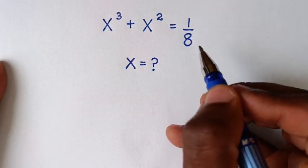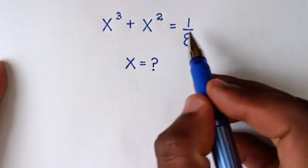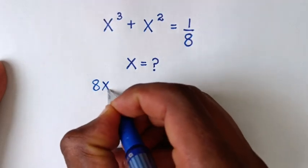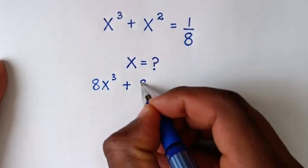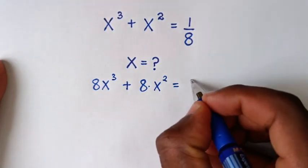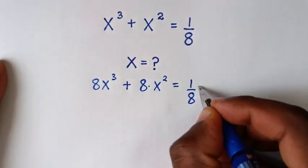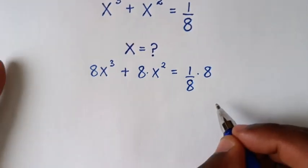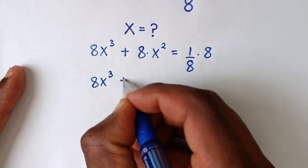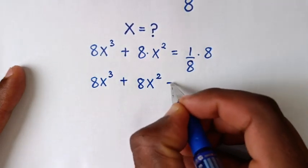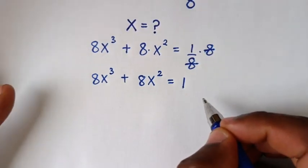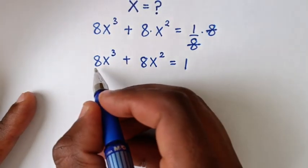So it will be 8 times x³ plus 8 times x² is equal to 1/8 times 8, giving us 8x³ + 8x² = 1. The 8s cancel so it is equal to 1.